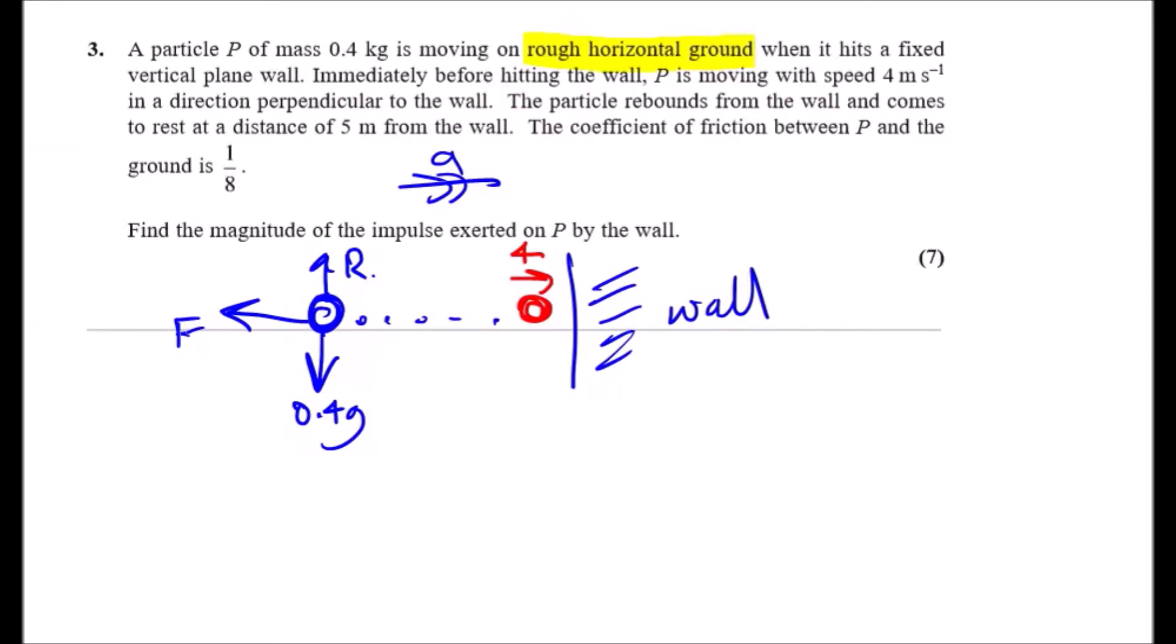Immediately before hitting the wall, P, the particle, is moving with speed 4m per second. So, let's say the particle reached over here. We can say now that the before speed was actually 4m per second. Okay, so far so good.